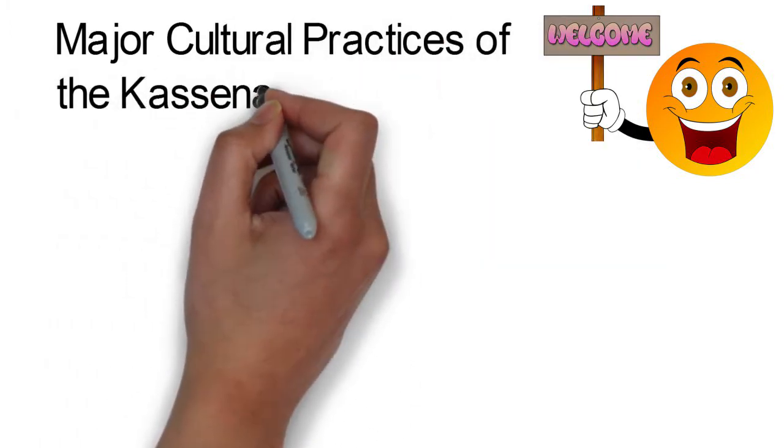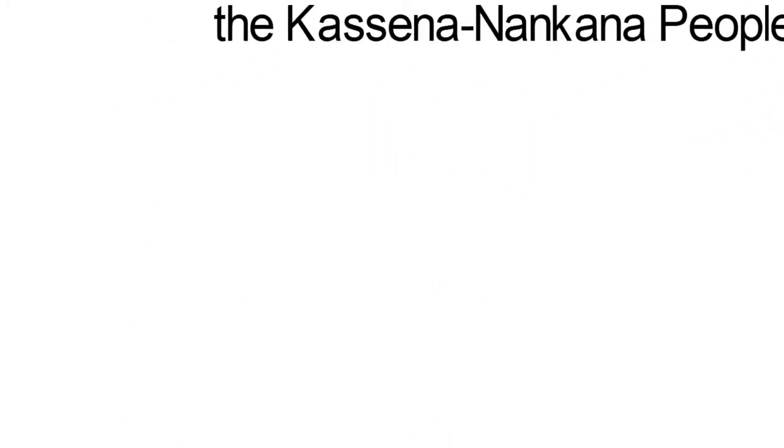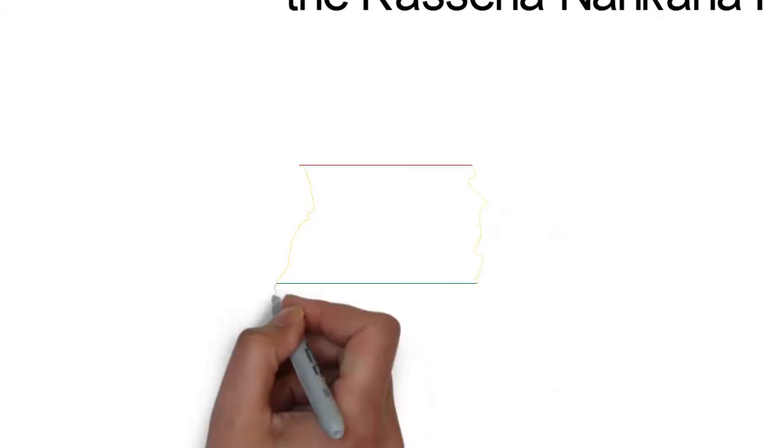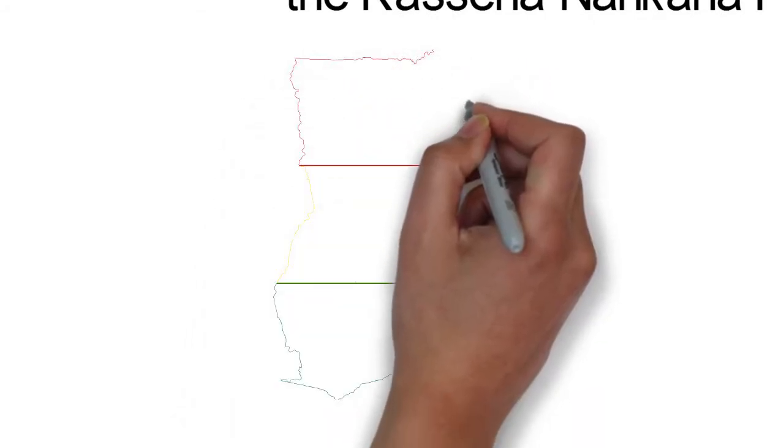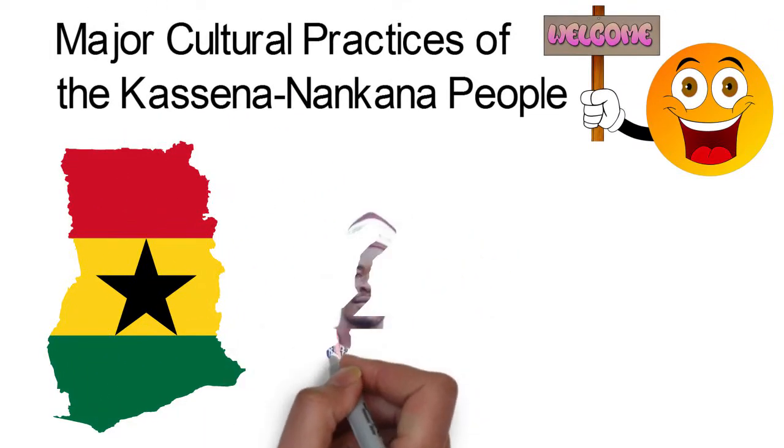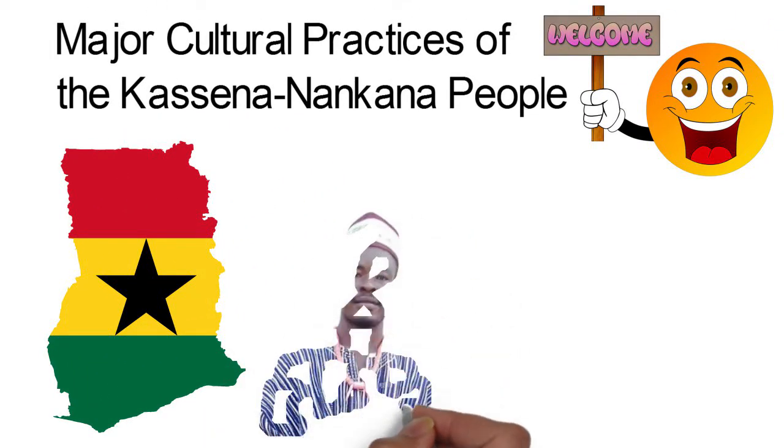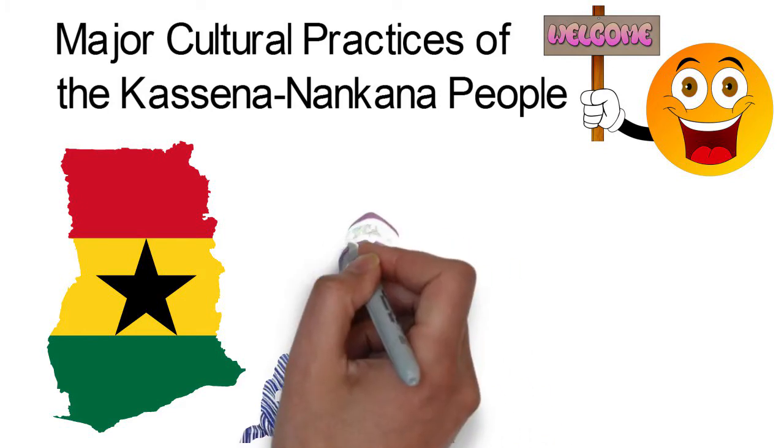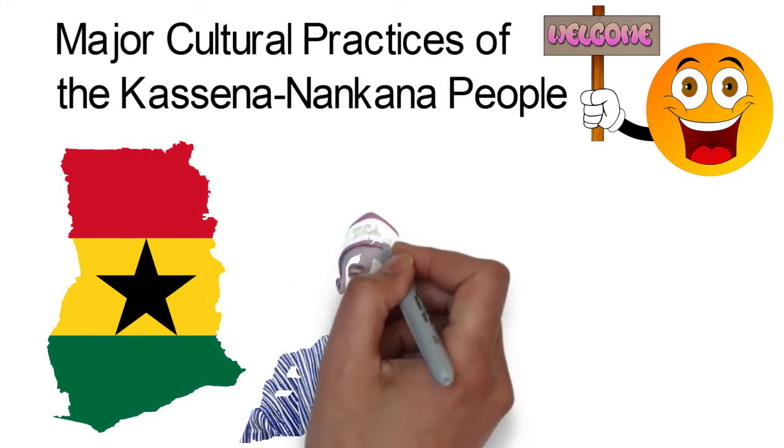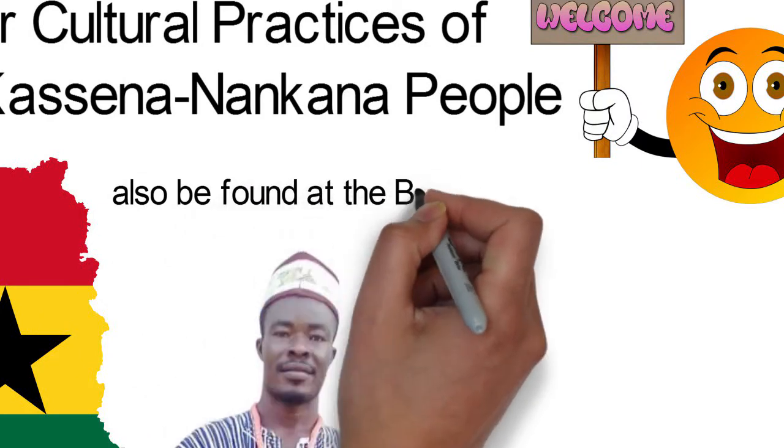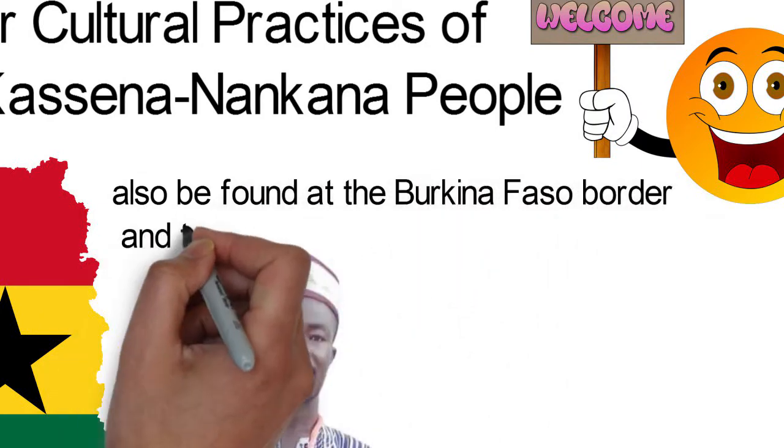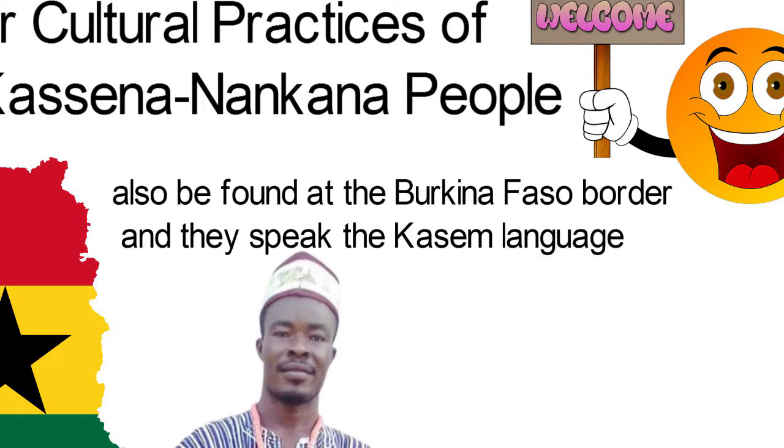Major Cultural Practices of the Kasena Nankana People. The Kasena Nankana district is among the nine districts in the Upper East region of North Ghana. The district was divided into different communities that had chiefs and some other traditional leaders known as Tindanas and Tigatus who had a lot of power and authority over their people. This ethnic group can also be found at the Burkina Faso border and they speak the Kasem language.